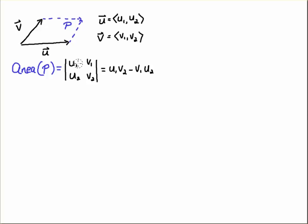Then the column v1, v2, which is the column form from the vector v. If I calculate the determinant, we'll have u1 v2 minus v1 u2, and that will give us the area of the parallelogram.